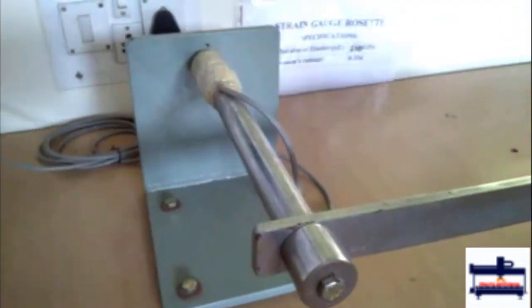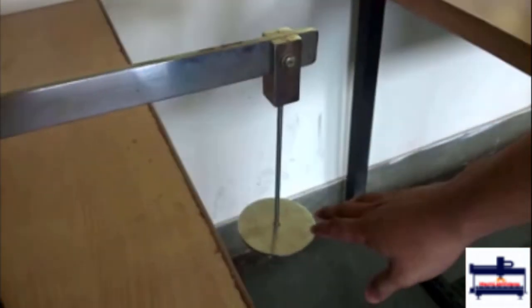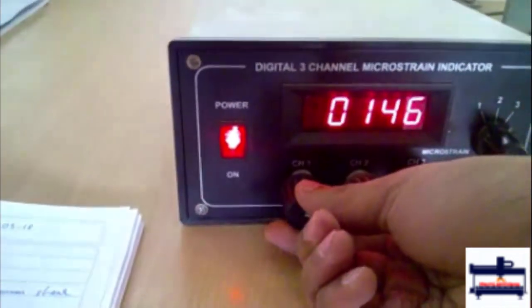Now this is the bar on which the strain rosette is present and at the end of this bar we apply loads here. So initially what we do is we don't apply any loads and we first put this to channel 1 and we set channel 1 value to 0.